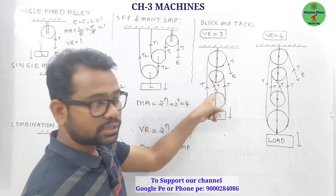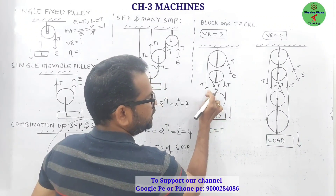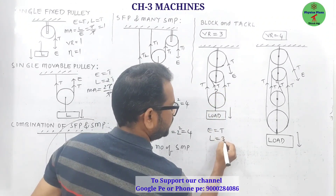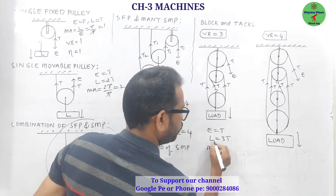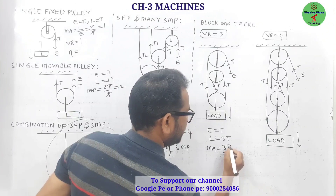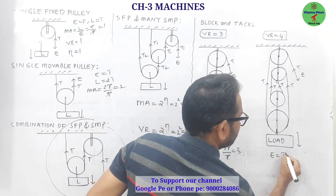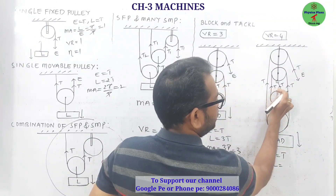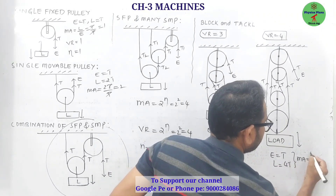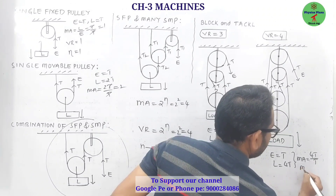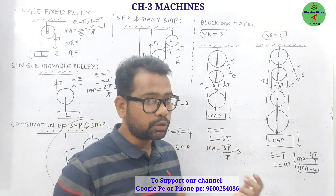To find the mechanical advantage of a block and tackle system: effort is balanced by tension T, and load is balanced by the number of string segments supporting the lower block. For 3 segments, mechanical advantage equals 3T divided by T, which is 3. For 4 segments, mechanical advantage equals 4T divided by T, which is 4. In ideal conditions, mechanical advantage equals the velocity ratio.